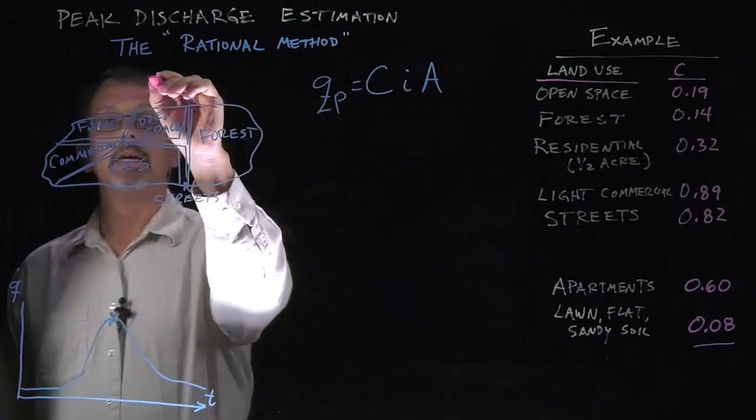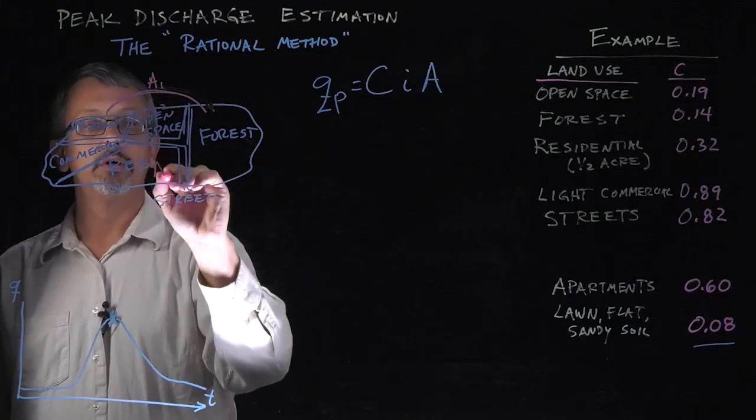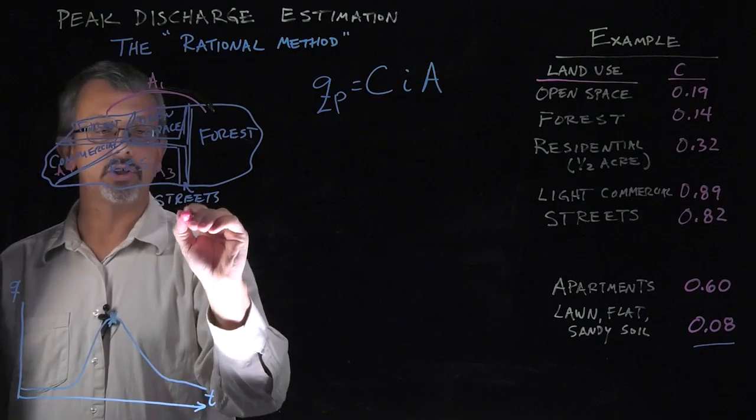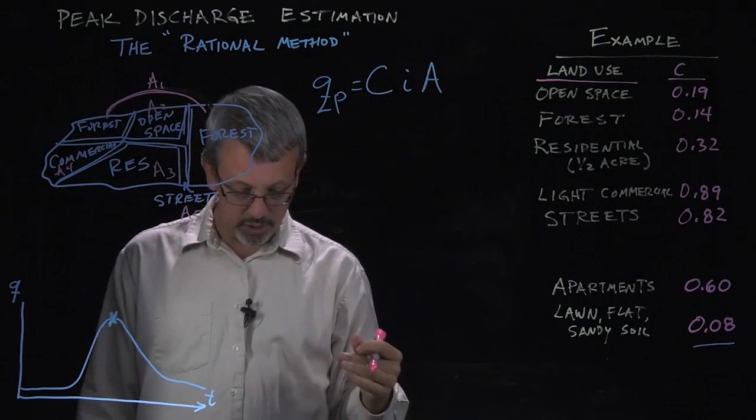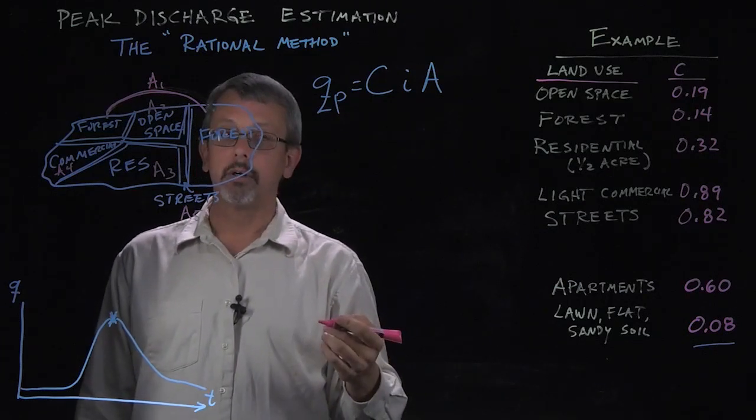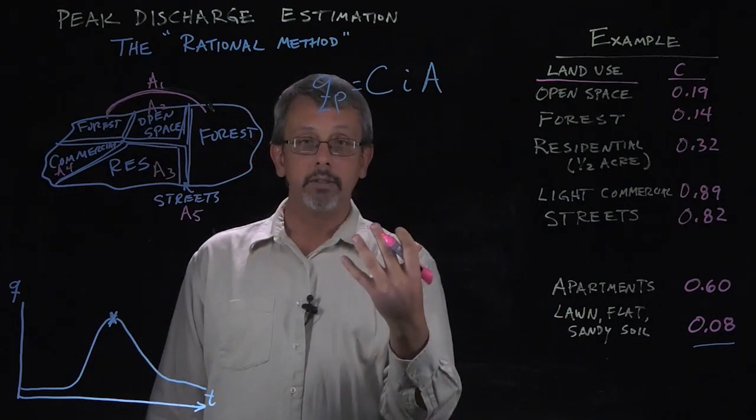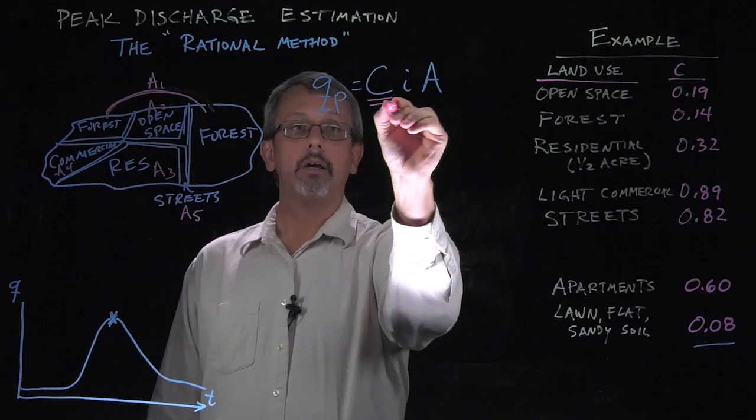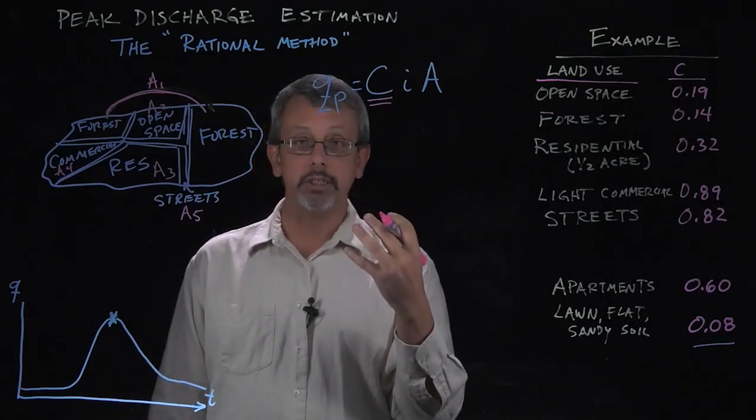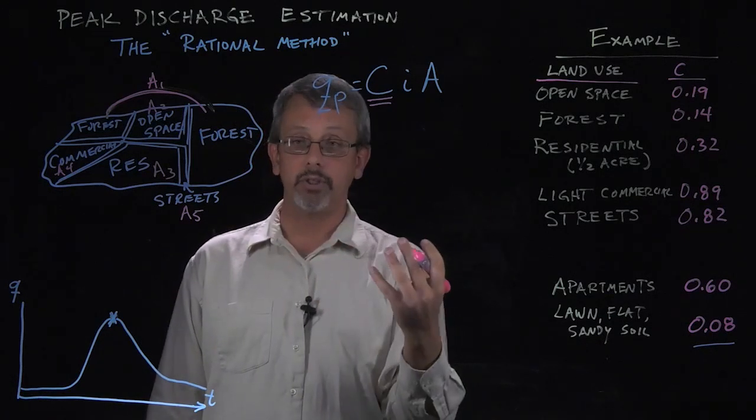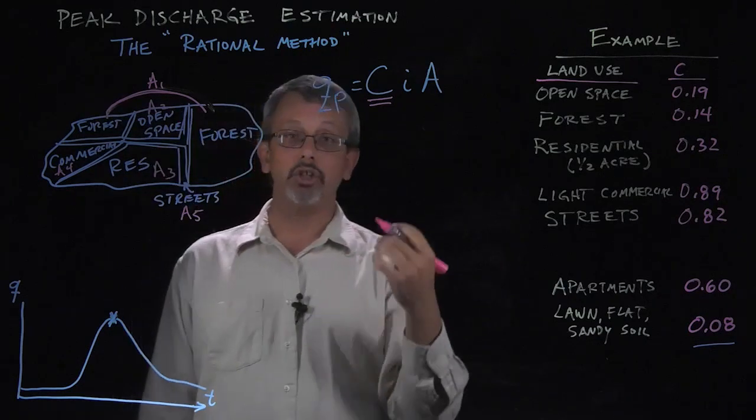Maybe we can call that A1. Some area associated with the open space A2, A3, A4, and the streets A5. If we can find the different areas associated with each of our different categories, well then what we can do is we can use area weighting to find a coefficient that takes into account all the different surfaces we have. But we'll need to do this by counting them based on how much area each takes up.